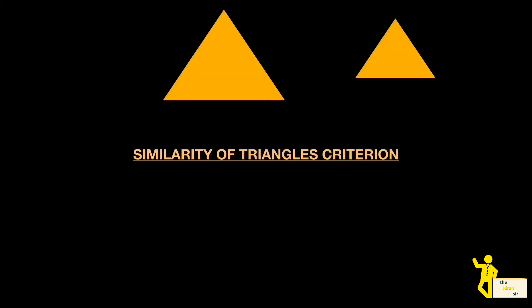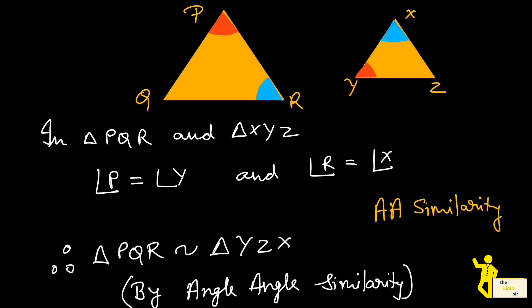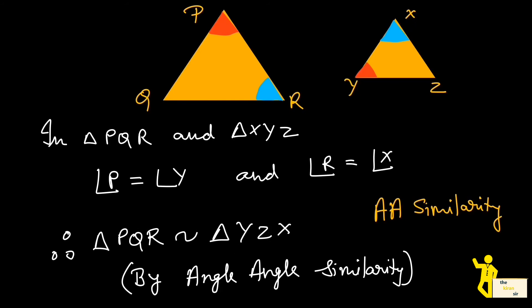Now we will study the three similarity criteria to prove any two triangles similar: AA similarity, SAS similarity, and SSS similarity. In the AA criterion, if two corresponding angles are equal — for example, angle P equals angle Y and angle R equals angle X — then the triangles can be proved similar by AA similarity. Writing in sequence, triangle PQR is similar to triangle YZX.